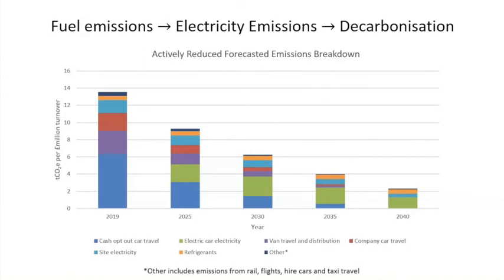Looking at the graph that shows your breakdown of emissions over time, you can work out what you need to do to reach your emissions targets. So for this organisation, what they would need to do is change their vehicle travel to electric vehicles.